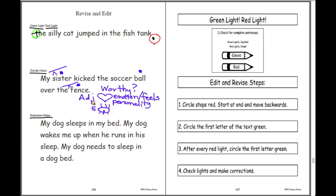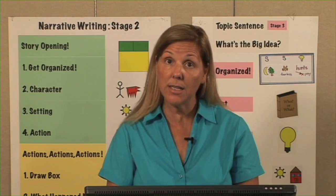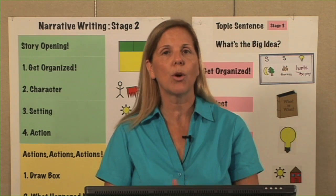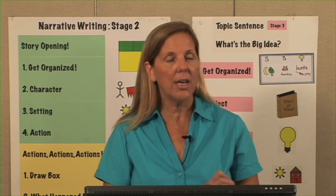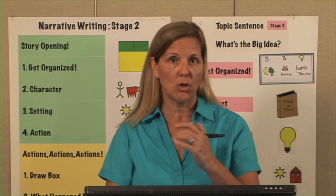The first thing we have to do is ask the type of adjective we're going to use. But before we do that, we have to ask the noun, 'what kind of?' There are emotion, personality, and five senses that we can use. Those are our types of adjectives, and we put it in the question: 'what kind of?' Watch what I mean by this.